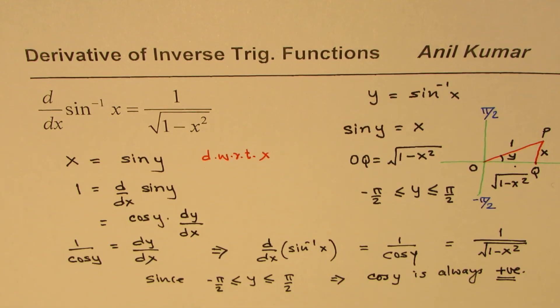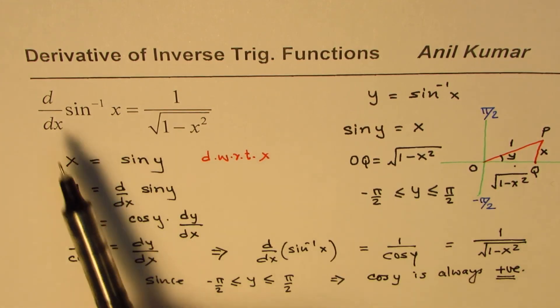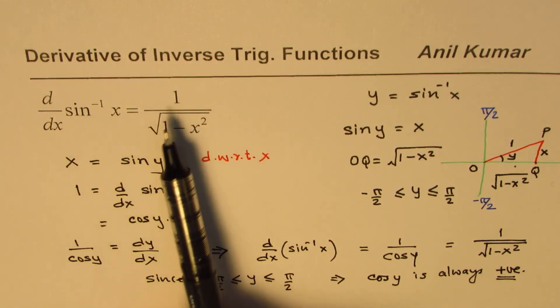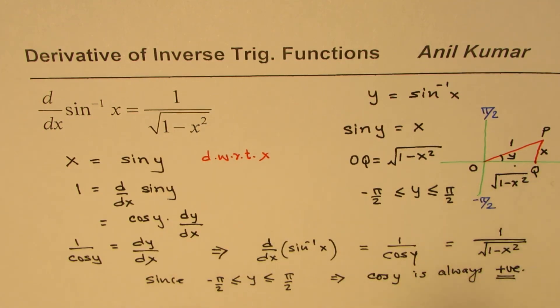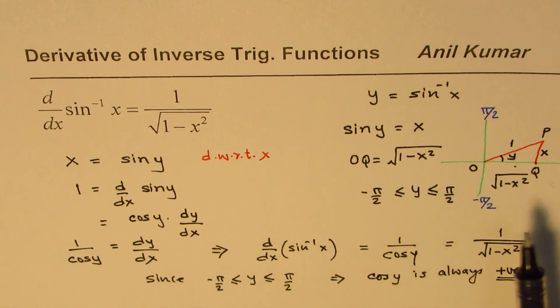So I hope you understand. One, the derivative of sine inverse x is 1 over 1 minus x squared. As you can see, it is always positive. And that is a basic concept which links both the things. I'm Anil Kumar, and I hope that helps. Thank you, and all the best.